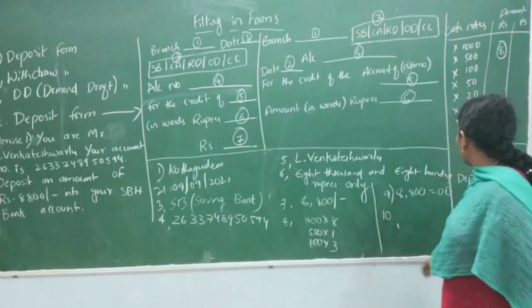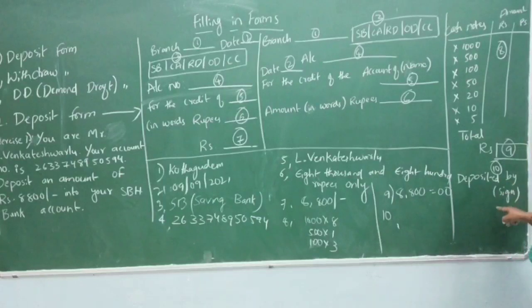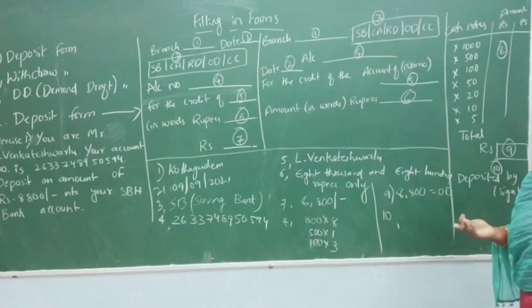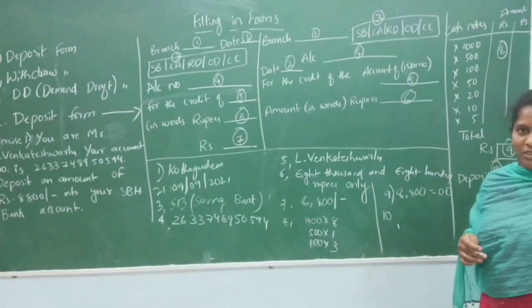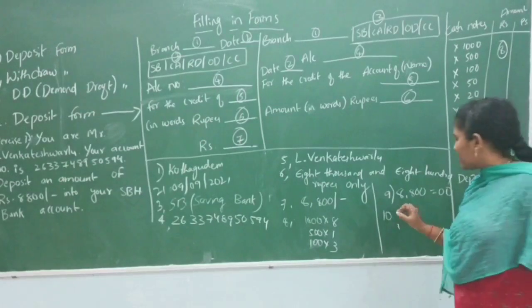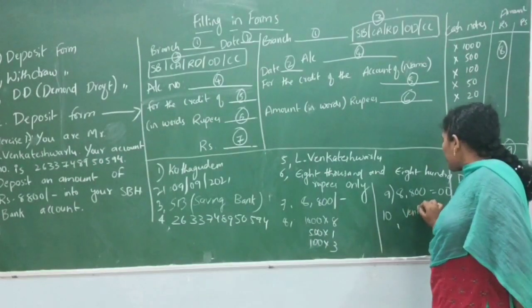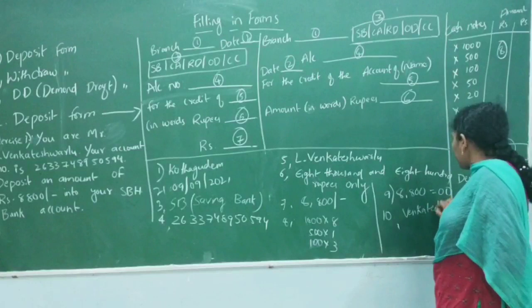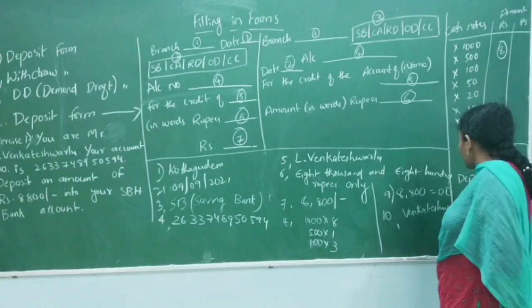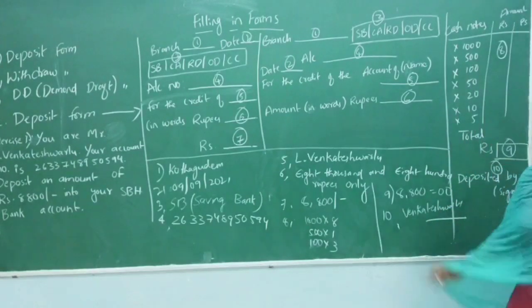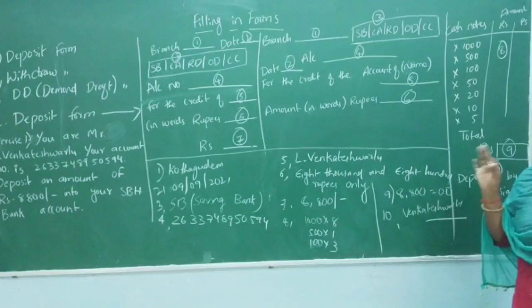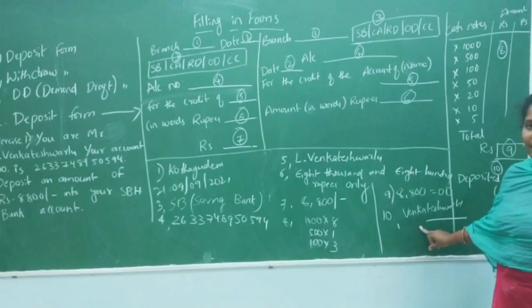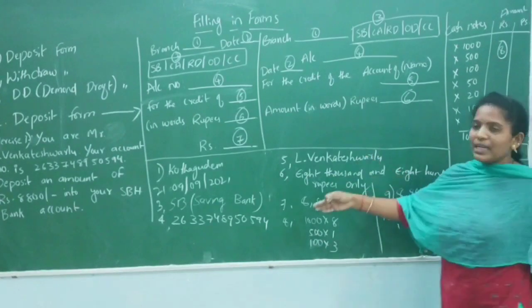In number 10, write "deposited by" and add your signature. The person who is depositing the amount signs here. Write your name clearly as the depositor.